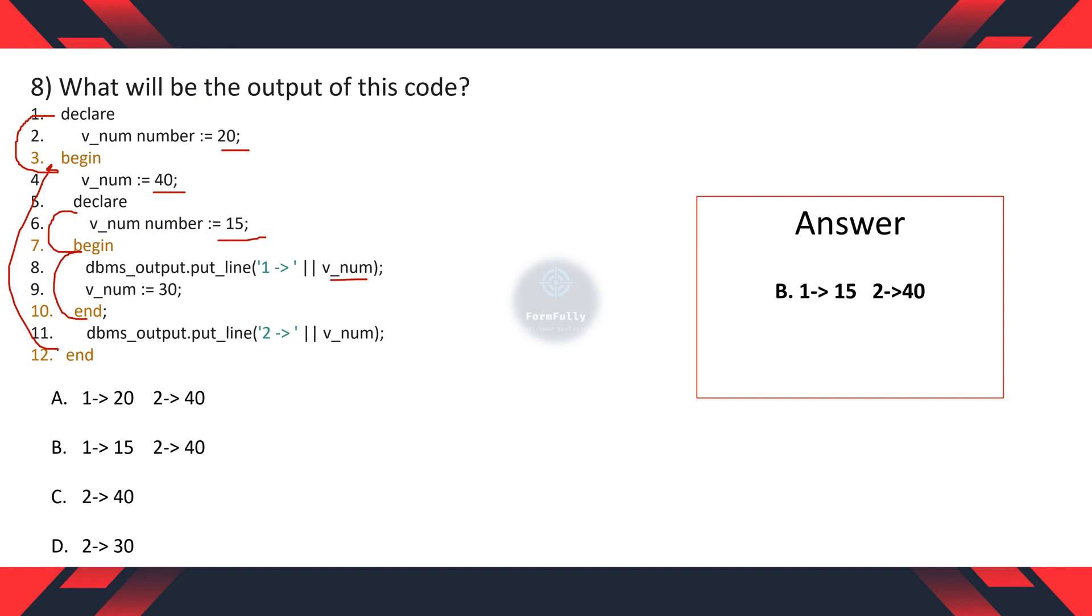But if you see here, vnum again replaced with 30. But this is the local variable assignment. We can say that the vnum is locally available to this inner block only, not to the outer block. So we cannot assign 30 outside this inner block. So in this print statement, vnum would be 40, because 40 is the last value which is assigned in the outside block.